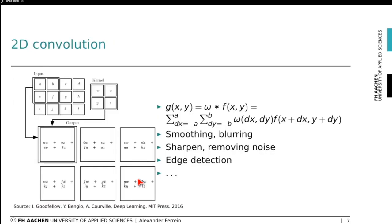Many image processing operations are based on 2D convolution. The idea is to apply a filter — also called a kernel — over the image. The kernel is multiplied with the input image at each position to produce the convolution value for that pixel. Note that image size decreases slightly in this process. Available kernel operations include smoothing or blurring, sharpening, noise removal, and edge detection, among many others.